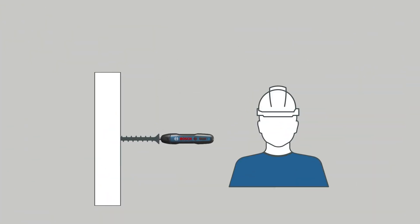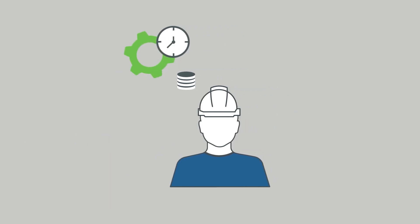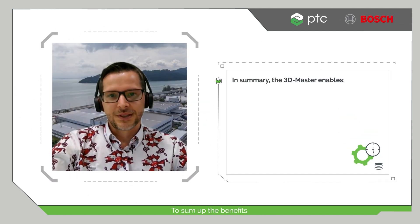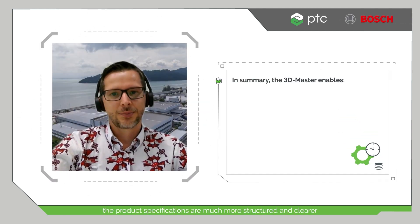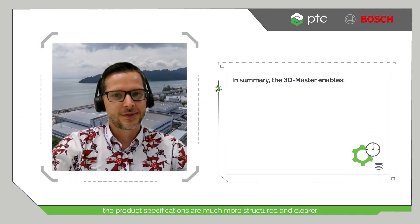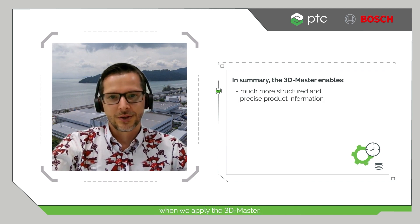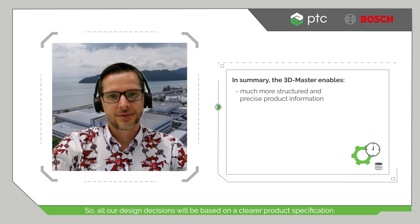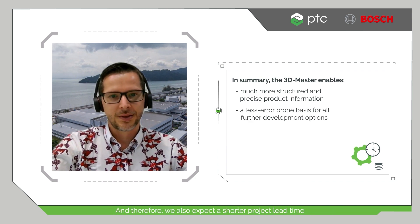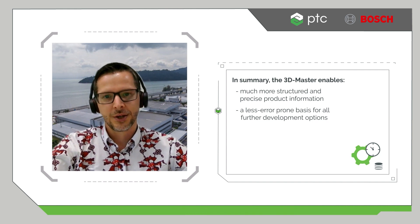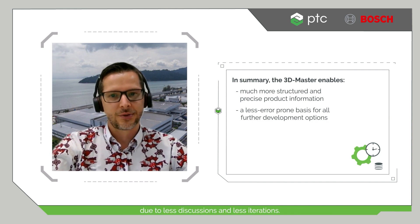An idea became reality, engineered digitally and efficiently with the 3D Master. To sum up the benefits: product specifications are much more structured and clearer when we apply the 3D Master. All design decisions are based on a clearer product specification, and we expect a shorter project lead time due to fewer discussions and iterations.